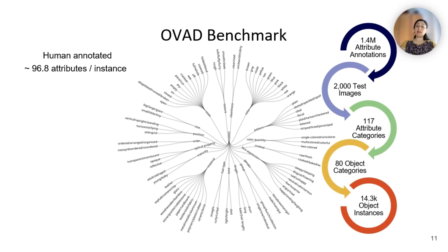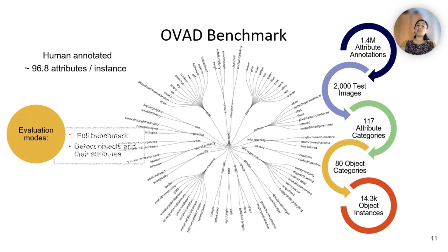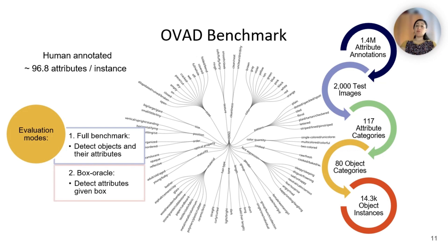The OVAD task can be evaluated in two settings: the full benchmark evaluation, where models are required to detect and classify all objects along with their attributes, and the box oracle evaluation, where object boxes are provided and only attribute classification is assessed.